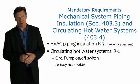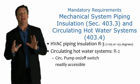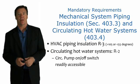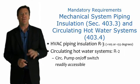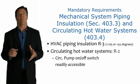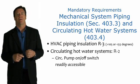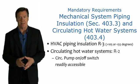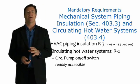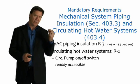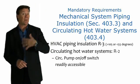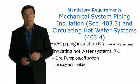Now let's talk about mandatory requirements for system piping and insulation for circulating hot water systems and hydronic systems. HVAC piping for a typical hydronic system with water temperatures of 105 to 55 degrees requires R3 insulation. Typical circulating hot water systems require R2. The circulating pump must have a readily accessible on-off switch. Those are mandatory requirements.